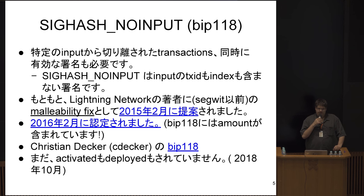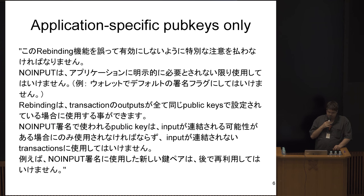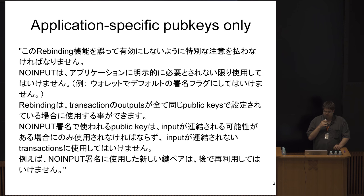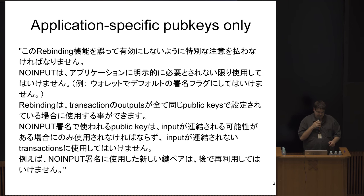There is a proposal written, BIP 118, written by Christian Jacker. It discusses something called application-specific pubkeys, which basically suggests that SighashNoInput should only be used in certain situations. You should not use it for everyday transactions. Instead, you should only use it for pubkeys that you've specifically created for the purpose of taking advantage of this SighashNoInput feature. This also goes back to why SighashNoInput was not selected as the malleability fix — because it's actually quite dangerous.